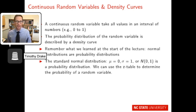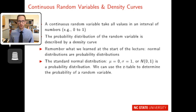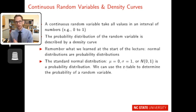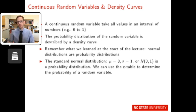Connecting continuous random variables back to the normal curve: a continuous random variable can take on all values in an interval. The probability distribution of a random variable is described by a density curve, and the standard normal distribution is essentially a probability distribution. We can know the probability that a value lies to the left or right of a given z-score, and the z-table helps determine that. A continuous random variable creates a probability distribution, and the standard normal distribution tells us the probabilities associated with any specific z-score.